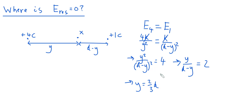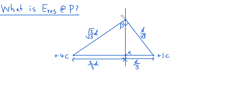Now let's look at a more interesting example: finding the field strength at point P, which is not on the line connecting the two charges. You are given the distances from each charge to point P, and the lines connecting the charges to P meet at right angles. As before, pause the video and try to work out the resultant field strength at P — including both its magnitude and direction, since field strength is a vector quantity.